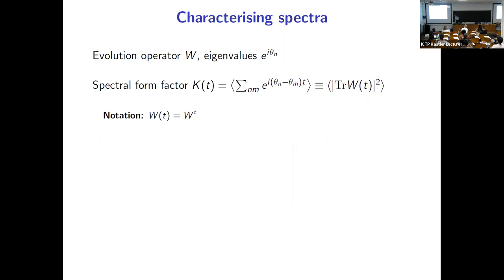I'm going to think about Floquet systems from now on. I have a unitary matrix with eigenvalues and I want to think about the spectral statistics of these eigenvalues. I can do it in terms of the spectral form factor, which is the Fourier transform — with T as the Fourier transform variable — of the two-point correlation function of these eigenvalues. I can write it as the trace of the evolution operator over T time steps.